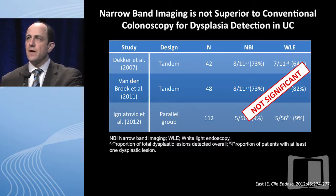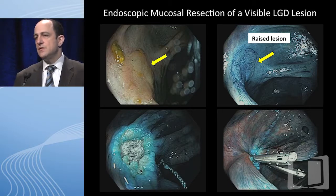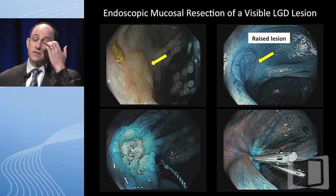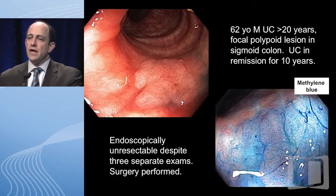I use narrow band to help me out all the time, but I don't want you to think it's a substitute for chromo in the patients who may benefit from it. You should at least know what the evidence shows and how small some of the studies are. Here's a patient with a lesion you can see with white light, but with methylene blue look at how nicely the margins are brought out. I did an endoscopic mucosal resection on this patient, and because the lesion was a little deeper than I'm usually comfortable with I used a couple of clips.